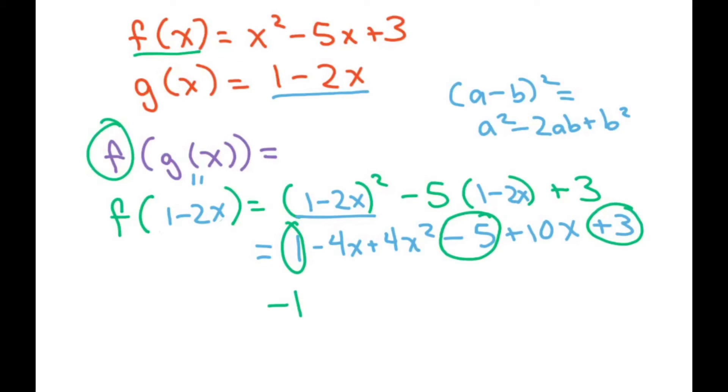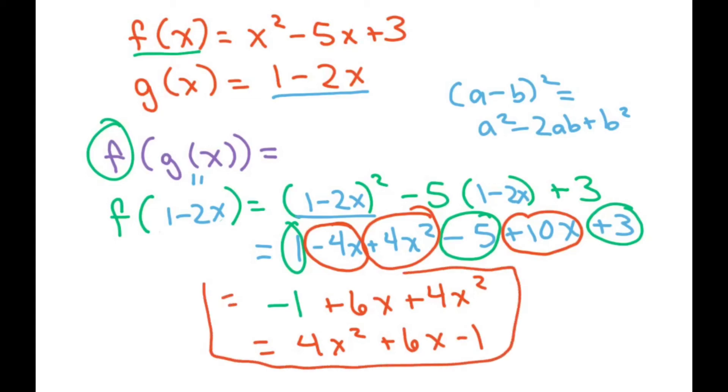And then we have x's. We have a negative 4x plus 10x. That's going to be plus 6x. And we just have 1 of the x squared, so that's plus 4x squared. And maybe it'd be better to write it as 4x squared plus 6x minus 1. Either way, these are both the correct answers.